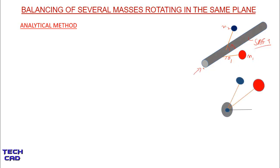This is a simple figure. This is theta 1 and this is M1. This is M2 and this is theta 2. The radius of M2 is R2 and this is R1. R1 and R2 are basically the distances from the axis of rotation towards the masses.